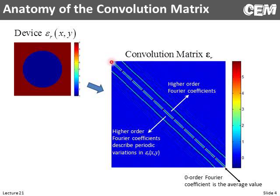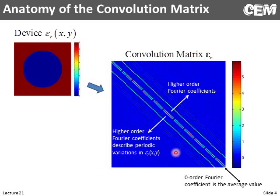Going down the center diagonal of the convolution matrix, it turns out it is the average value of the function. So we have values of one here and nine out here; if we average this value, it comes out to almost six. So the numbers going down the center diagonal represent the average value, which also corresponds to the zero-order harmonic. As we go off the diagonal, these are the higher-order Fourier coefficients, and the more modulation there is in the dielectric function, the more numbers we expect off the diagonal.